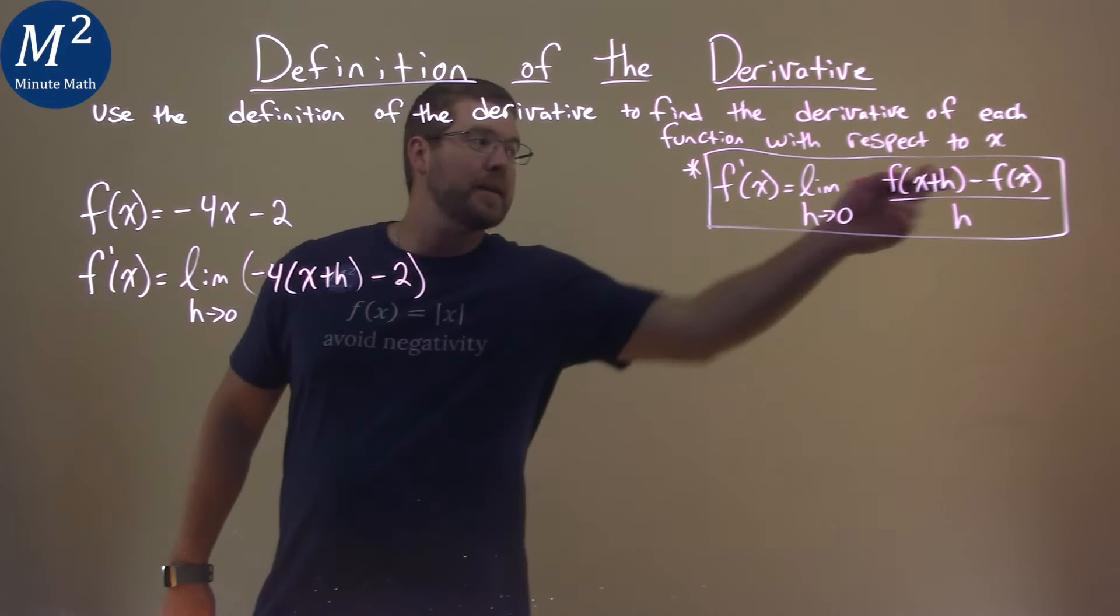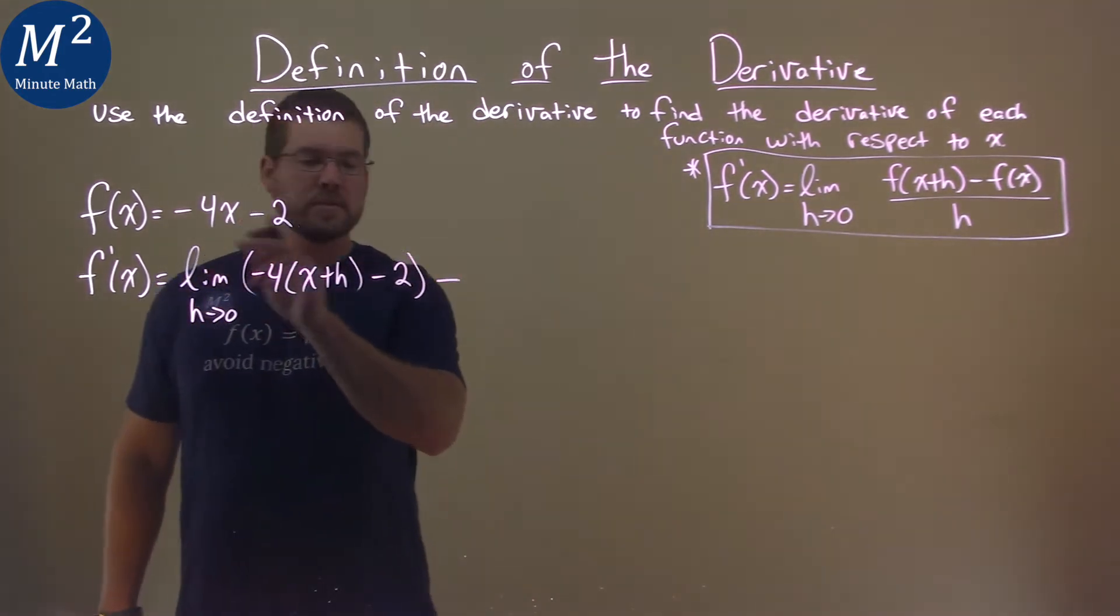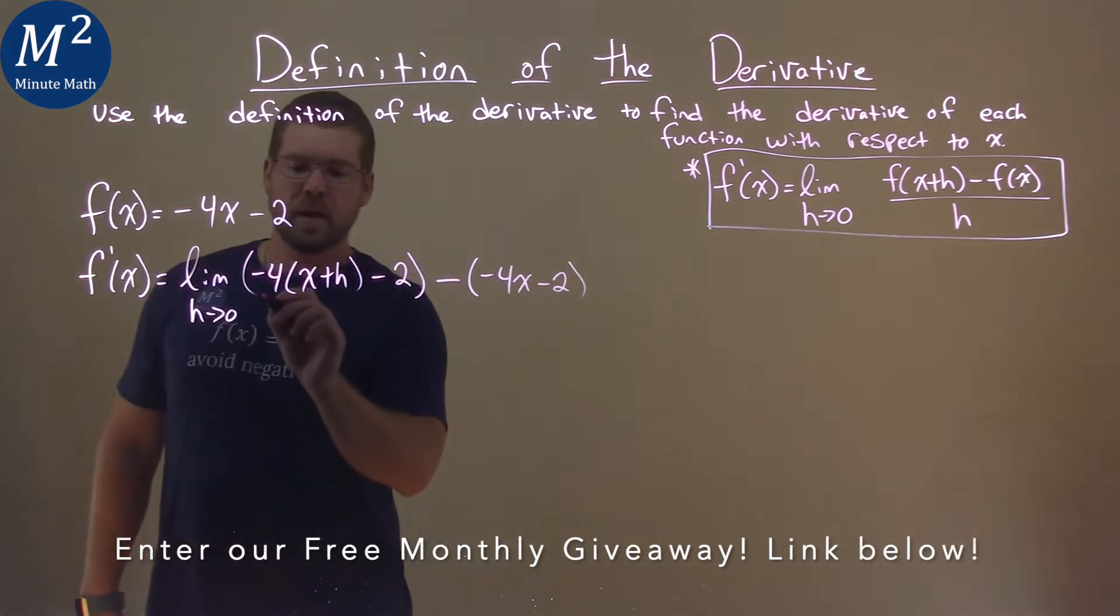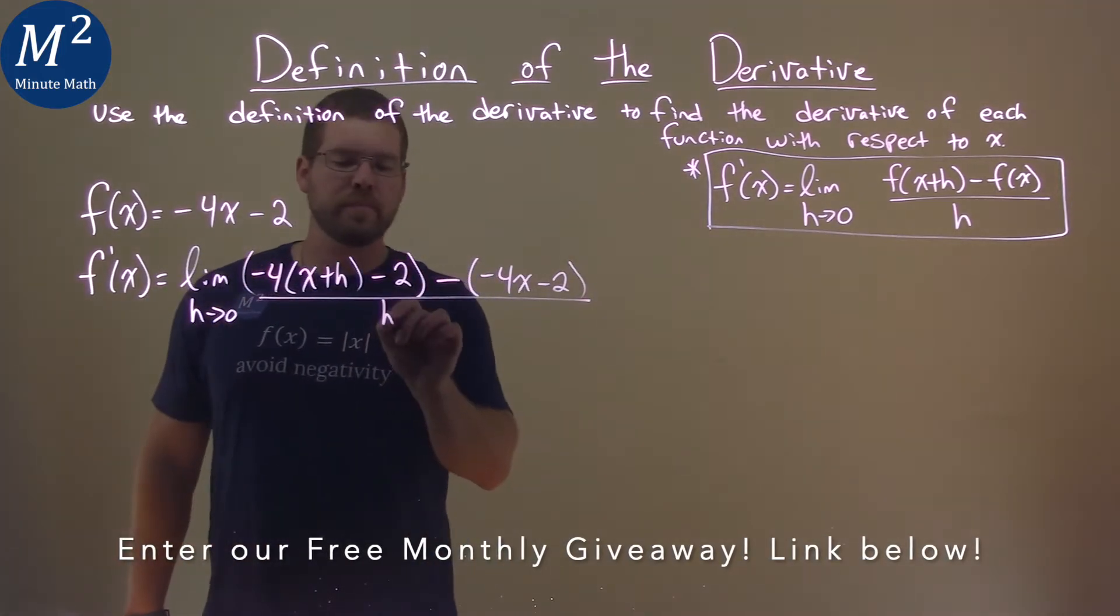Then we have to subtract f(x), our original function, so subtract negative 4x minus 2 right there. And that's going to be all over our h value.